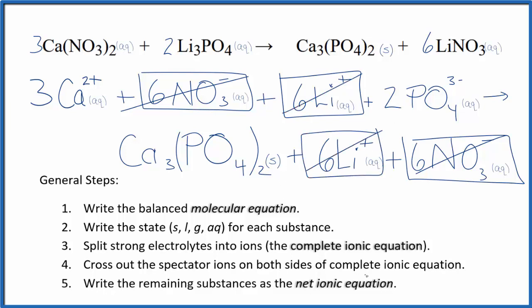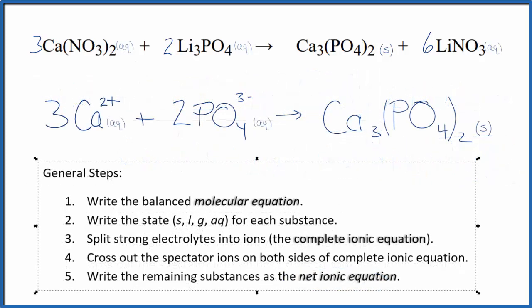What's left is the net ionic equation for Ca(NO₃)₂ plus Li₃PO₄. Let's remove these spectator ions. And this is the balanced net ionic equation.